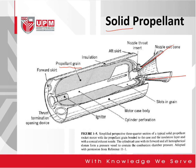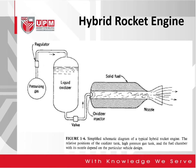The cylindrical case with its forward and hemispherical dome form a pressure vessel. It has a few main components: the igniter, the motor case body, cylinder perforation, and slots in the grain. Basically, the thrust will be produced backward.